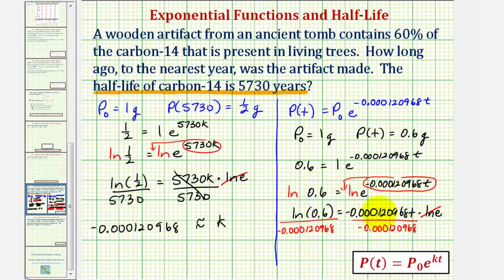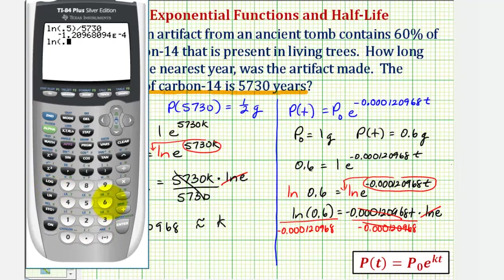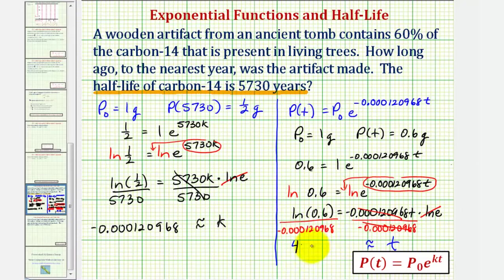On the right, this simplifies nicely to t. Therefore, this quotient — natural log 0.6 divided by negative 0.000120968 — will tell us how old the artifact is. To the nearest year, we can say that the artifact is approximately 4,223 years old. I hope you found this helpful.